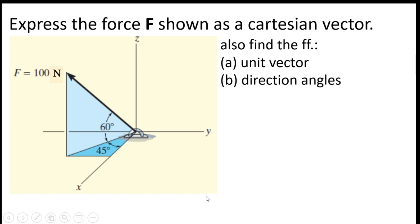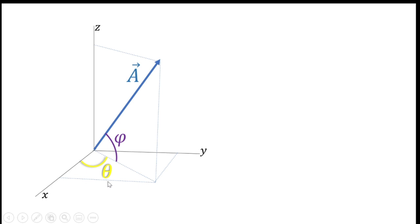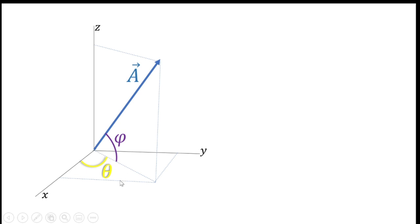So let's talk about what these angles are. The angle theta is what we call the transverse angle, while the angle phi is what we call the azimuth angle. The transverse angle is the angle from the hypotenuse of this right triangle to the x-axis or y-axis. The azimuth angle is the angle between the given vector and its adjacent side, which is also the hypotenuse of our transverse angle.